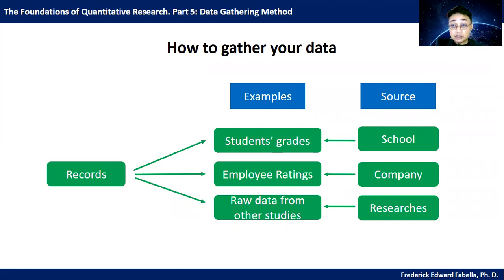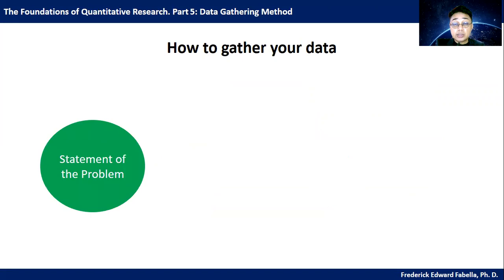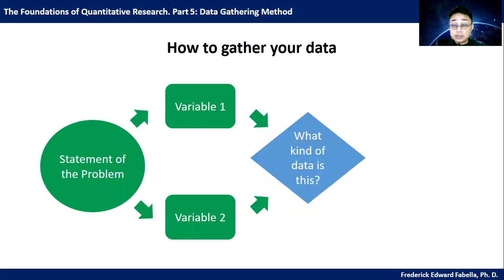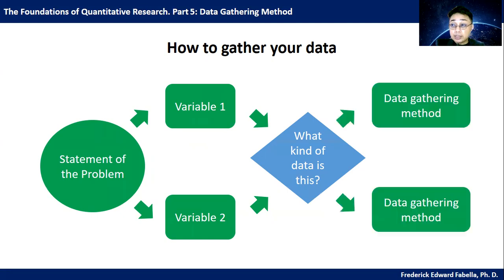Let's try to sum up. The statement of the problem will have identified your variables — variable one and variable two. Once you've been able to answer what kind of data that is and found a way to measure or obtain it, you can now proceed to your data gathering method.